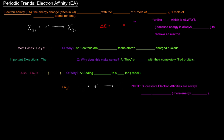Next up is electron affinity, so we'll start off with the definition. Electron affinity is the energy change, often in kilojoules, associated with the addition of one mole of electrons to one mole of gaseous atoms or ions. So here we have a neutral gaseous atom in the gas form, and it's kind of the opposite of ionization energy — we're adding an electron here to get an anion.